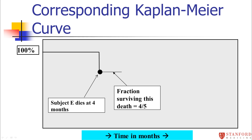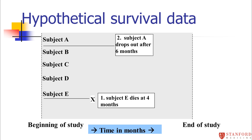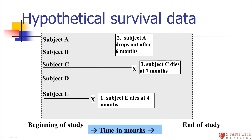The survival probability now goes down to 80% — four out of five survived that event time, four out of five survived past four months. Next, subject A drops out after six months. They're censored at six months. We don't know if they went on to die, but we know they were alive through the first six months. We're not going to change the curve, but we'll indicate that censoring with a little mark.